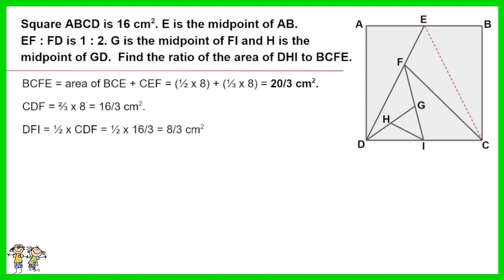DFI equals half of CDF equals half of 16 over 3 equals 8 over 3 cm squared. DGI equals half of DFI equals half of 8 over 3 equals 4 over 3 cm squared.